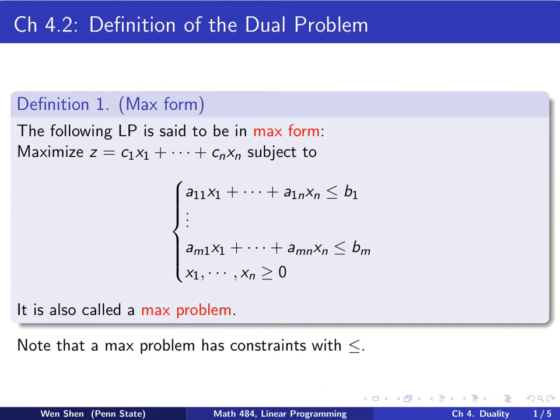Definition 1, we introduce the concept of the max form. The following linear programming problem is said to be in max form. The form is the following: Maximize an objective function subject to the constraint.